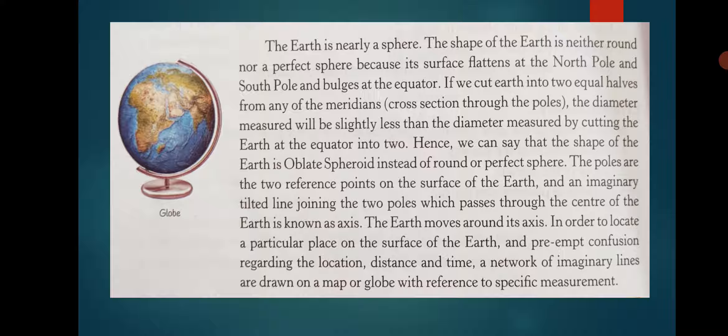This shape is referred to as geoid. The earth is represented by a spherical model called the globe. The globe is always mounted on its stand with its axis tilted, because the earth's axis is also tilted at 23 and a half degrees away from the perpendicular to its orbital plane.